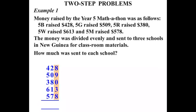Starting with our units: eight plus nine is seventeen, plus zero, plus three is twenty, plus eight is twenty-eight. Write down eight, carry the two. Two plus two is four, plus eight is twelve, plus one is thirteen, plus seven is twenty. Write down zero, carry the two. Two plus four is six, plus five is eleven, plus three is fourteen, plus six is twenty, plus five is twenty-five. So the total is two thousand five hundred and eight dollars.